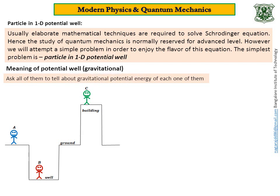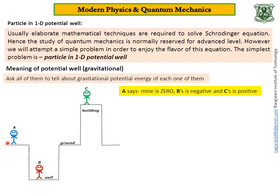Now ask one common question to all of them: ask them to tell the gravitational potential energy of each one of them. If you ask A, B, and C, do you think they all give the same answer? No. A says mine is 0, B is negative, and C is positive. He is correct because he is taking the ground as reference. With respect to the reference ground level, he is at height 0, so H is 0, and therefore MGH is 0. But B is at negative height minus H, so his energy is negative. C is at height H, so his energy is positive.